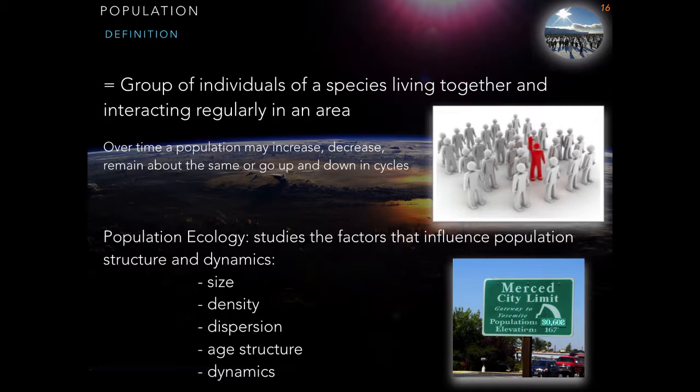Population ecology is analyzing or investigating how a population changes with regard to specific factors such as the size, the density of a population, its dispersion — the way it's spread over a defined surface — the age structure, and its dynamics. This is already something we looked at in the previous chapter when we were talking about human population.